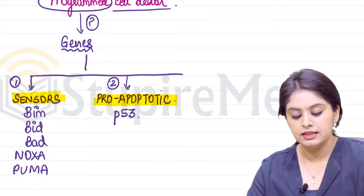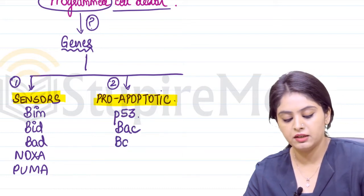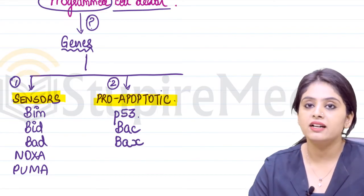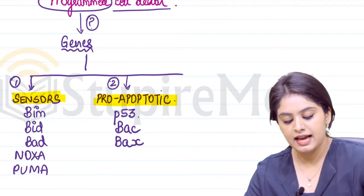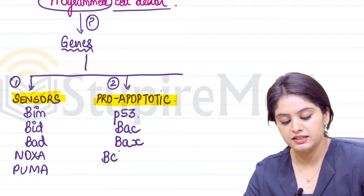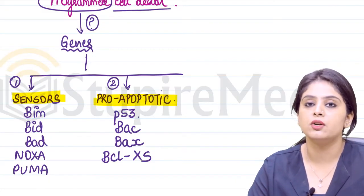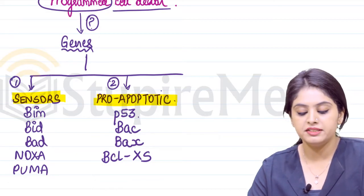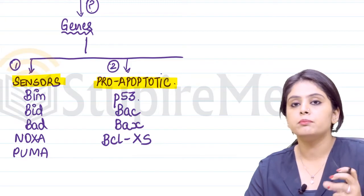Other than that, it includes Bac, something similar sounding - add an inverted C, so Bax. So we had Bac, then Bax, and now we have BCL-XS. So some really tough words: P53, Bac, Bax, and BCL-XS will be pro-apoptotic.